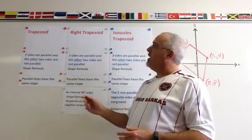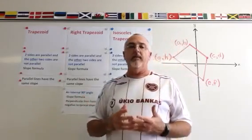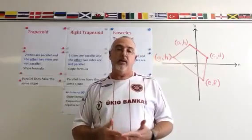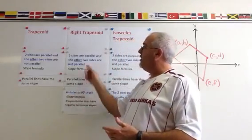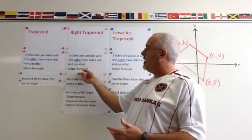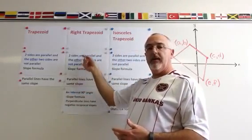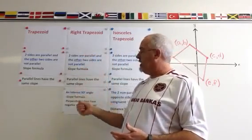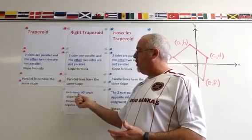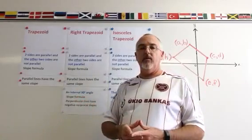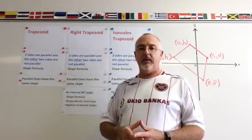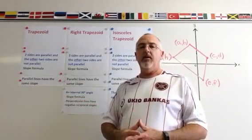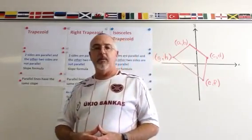The right trapezoid would have two internal 90 degree angles. But if you have already proven that it is a trapezoid, as soon as you've proven one internal 90 degree angle, the second one has to exist, and you don't have to prove it separately.